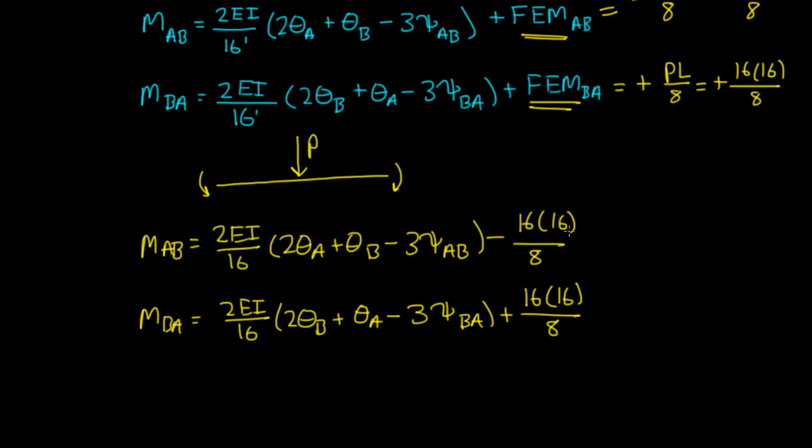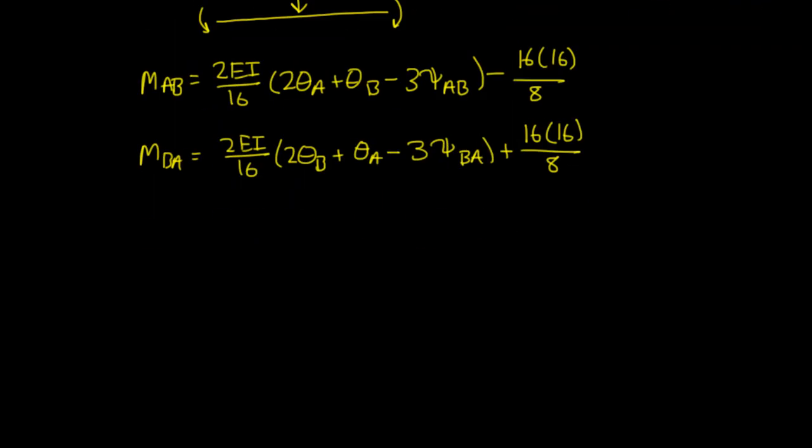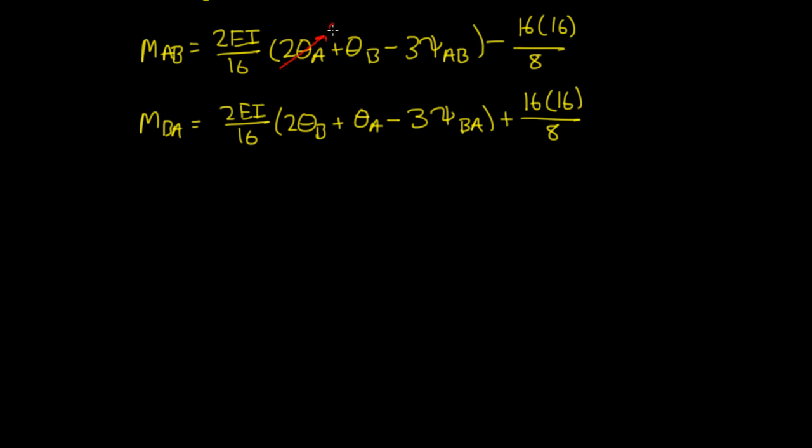Now there's a couple things we can cancel out. The slope θ_A here is equal to zero because there's a fixed end here. We have θ_B here which we don't know. Now this member AB is being deflected but it's not rotating in any way, so we can also say that the chord rotation for member AB, ψ_AB, is equal to zero. With these two values known, we can say θ_A equals zero and the chord rotations are also equal to zero.